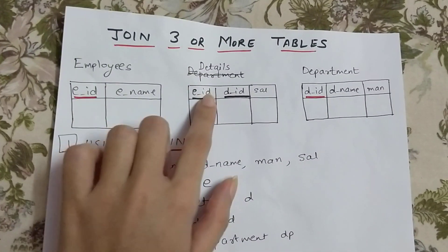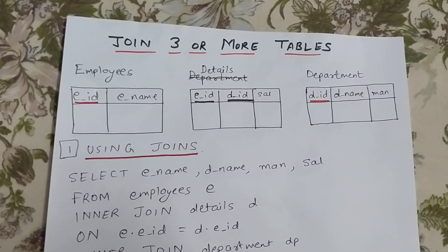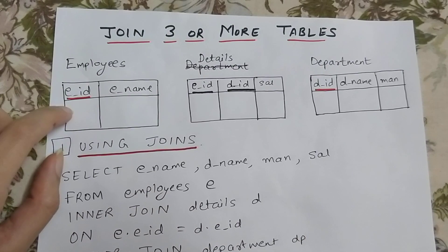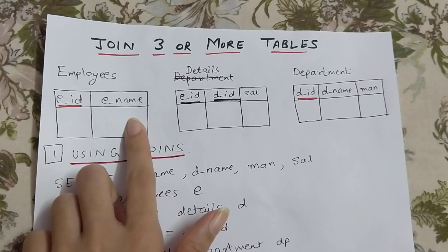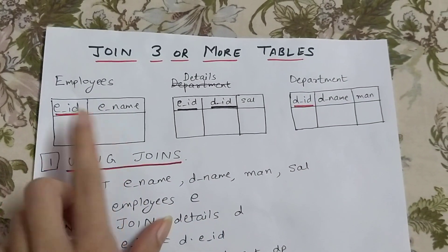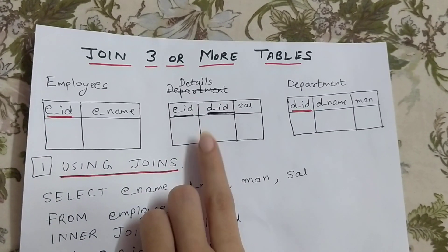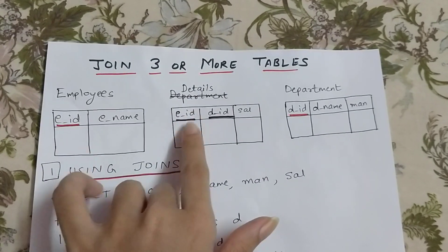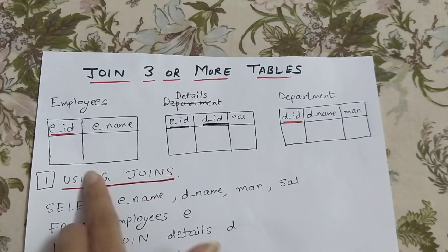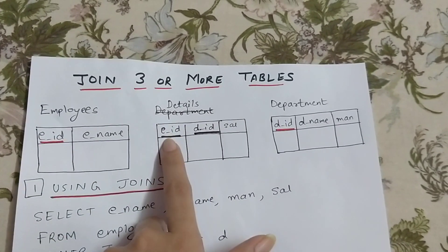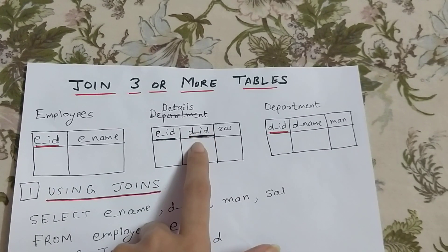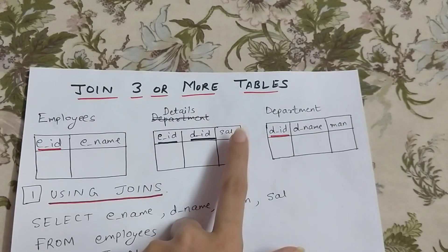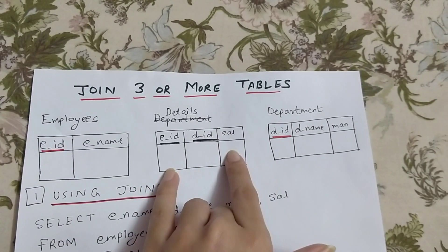I have three tables: one is employees, another is details, and the third is department. In the employees table we have employee ID and employee name. EID is the primary key. The details table has a foreign key EID — which is linked to the employees table — and also DID which is also a foreign key, and salary.